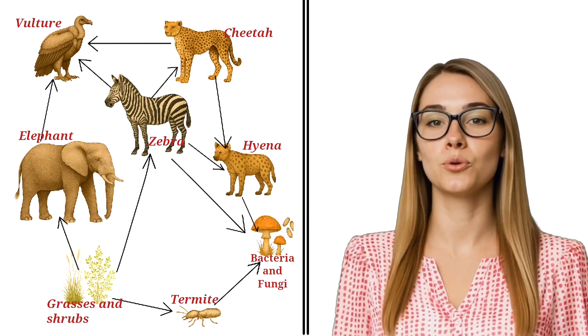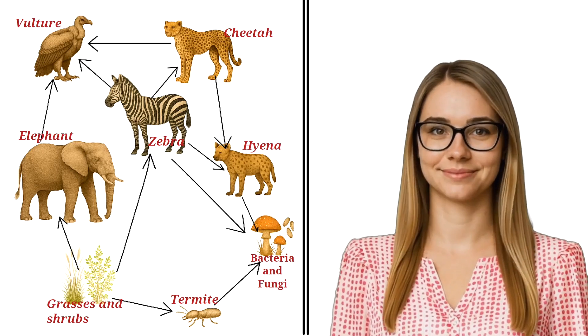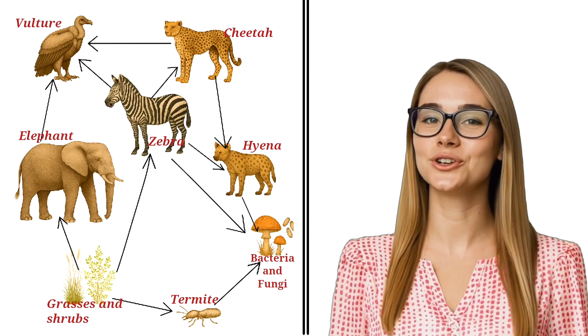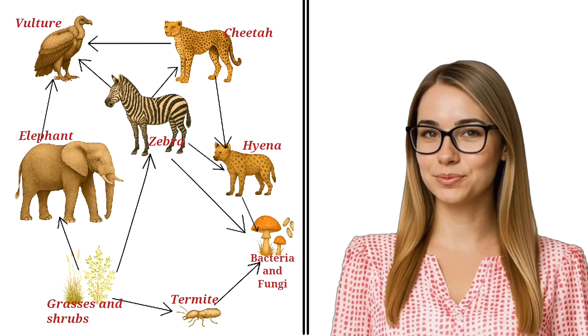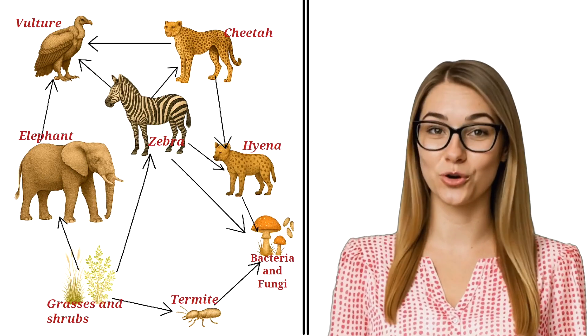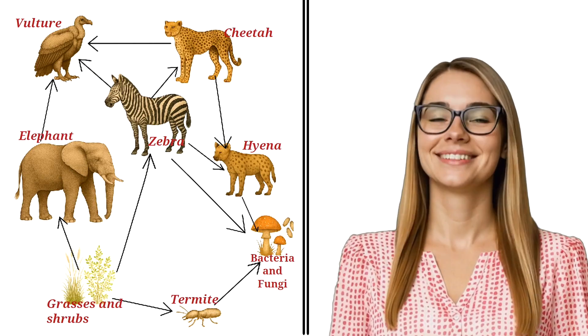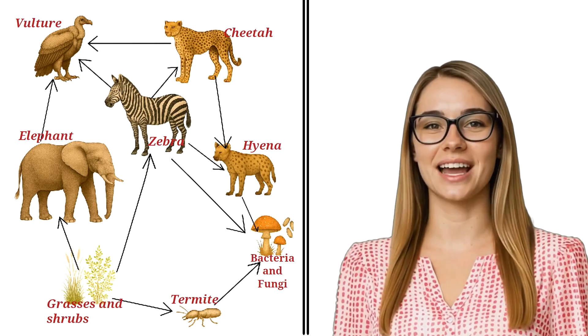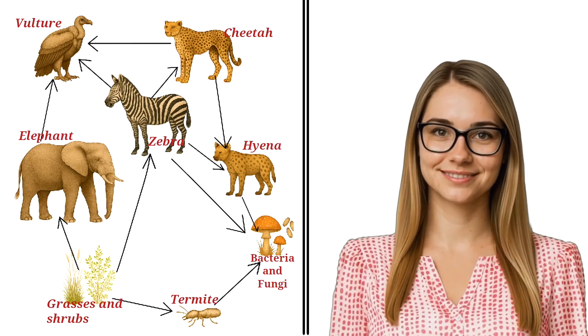The diagram shows a food web from a savanna ecosystem. The arrows in the diagram point from food sources to the organisms that consume them. Use this diagram to answer the following questions.